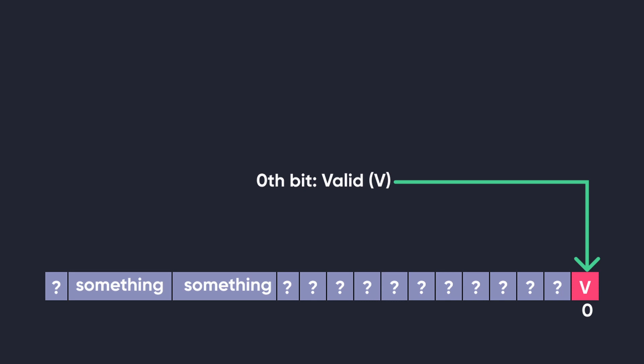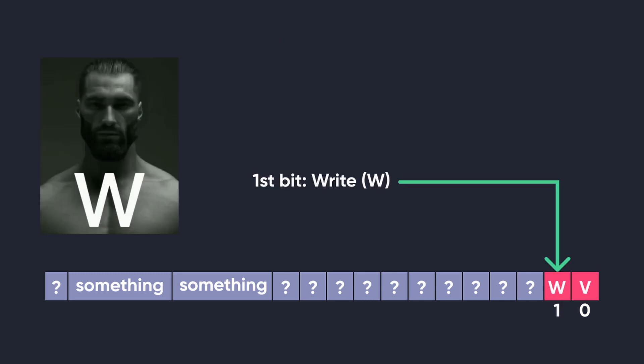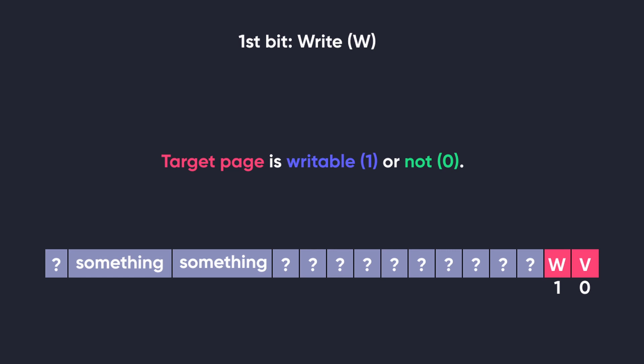The zeroth bit is the valid bit, V. This bit tells whether the page to which this page table entry points is paged out to disk or not. If it is paged out, the bit is set to 0; if it is not, it is set to 1. The first bit is the write bit, W. This tells whether the page is writable or not — it indirectly tells the MMU if a page is read-only. If it is writable, the bit is set to 1; if it is read-only, it is set to 0.